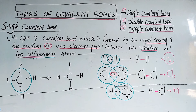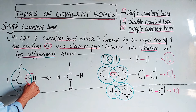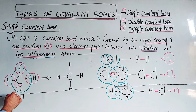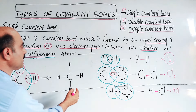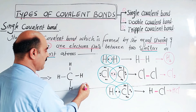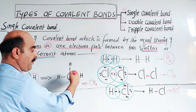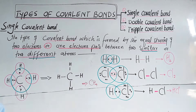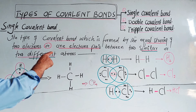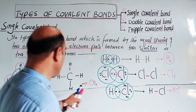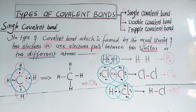The shared electrons are counted with both atoms: each hydrogen gets 2 (duplet complete) and carbon gets 8 (octet complete). In this way the separate carbon and hydrogen atoms convert to the methane molecule. This was the first type of covalent bond — the single covalent bond — and we saw its formation with both similar atoms (H2, Cl2) and different atoms (HCl, CH4).